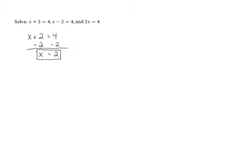If you want to check that a solution is correct, you can plug it into the original equation and see if it makes a true statement. We're going to check all three of these equations. The original equation is x plus 2 equals 4, and our solution was x equals 2. So I'm going to substitute 2 in for x, giving us 2 plus 2 equals 4. Since 2 plus 2 is 4, this gives us 4 equals 4, which is a true statement. So we know we've solved the equation correctly.